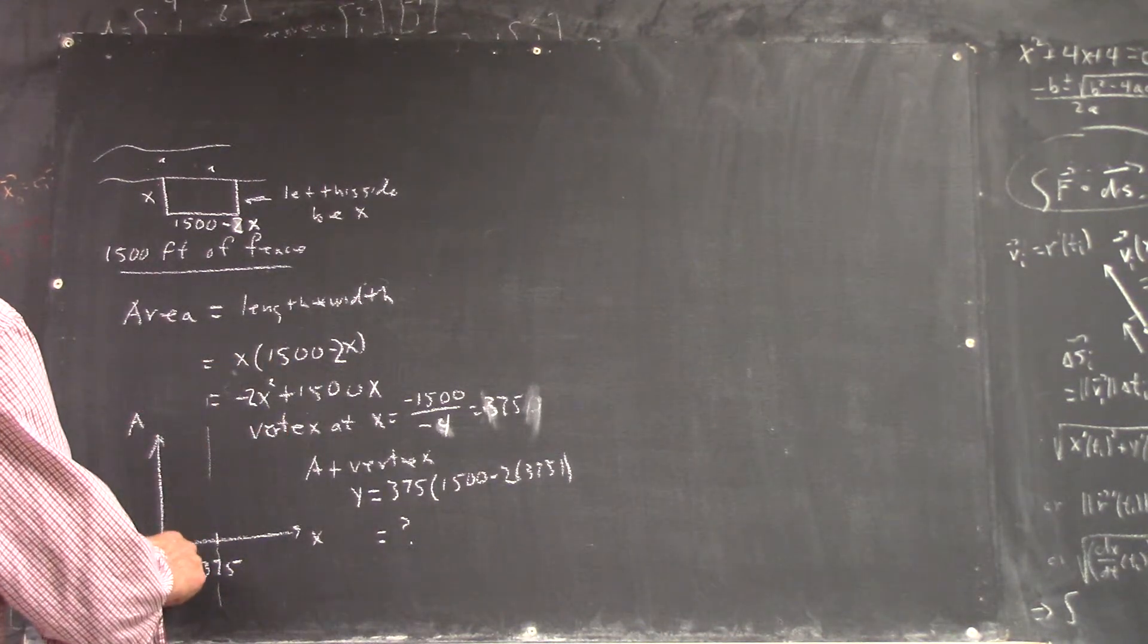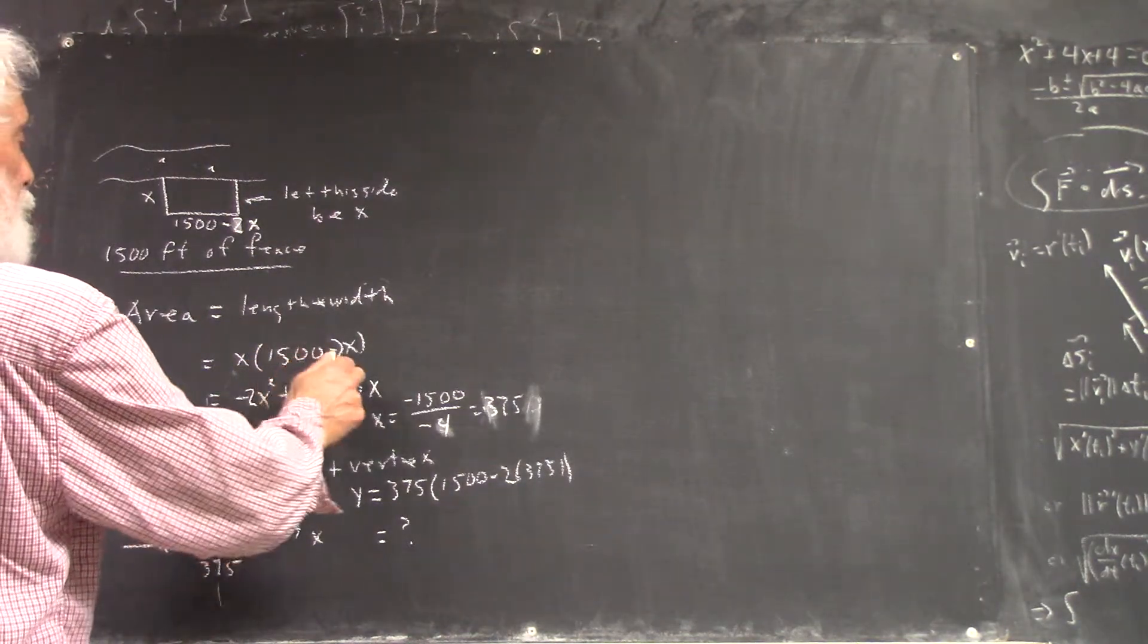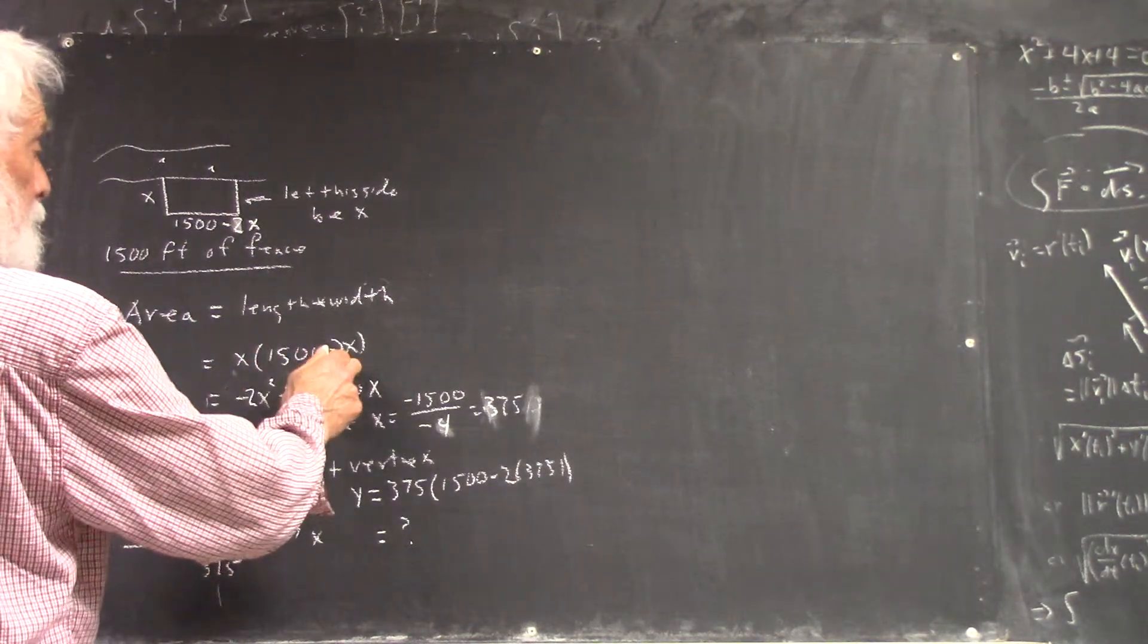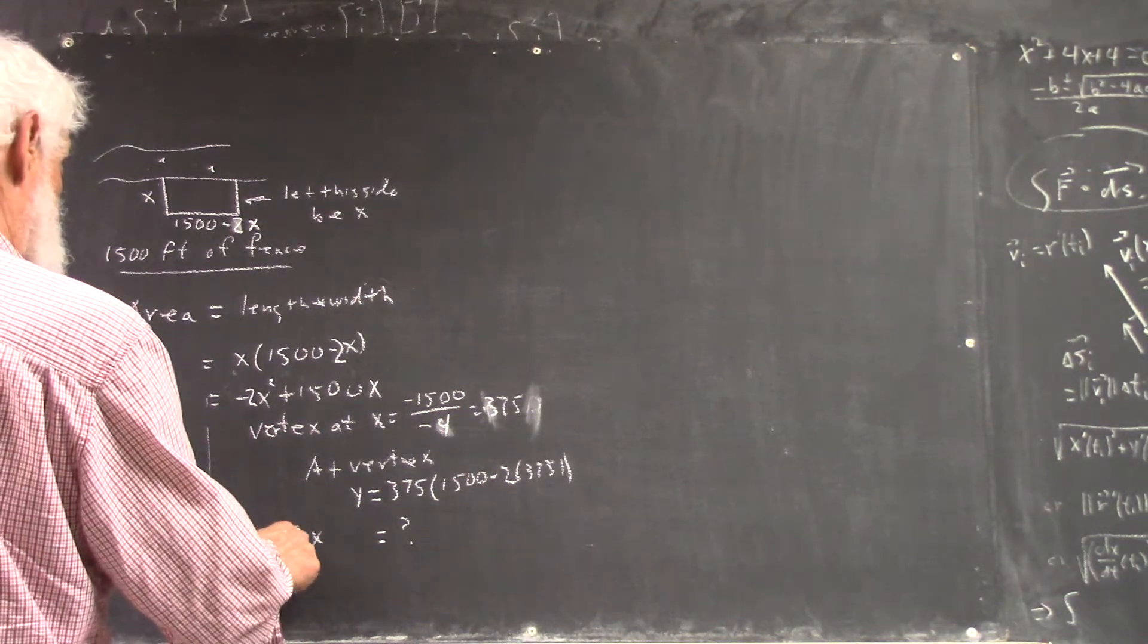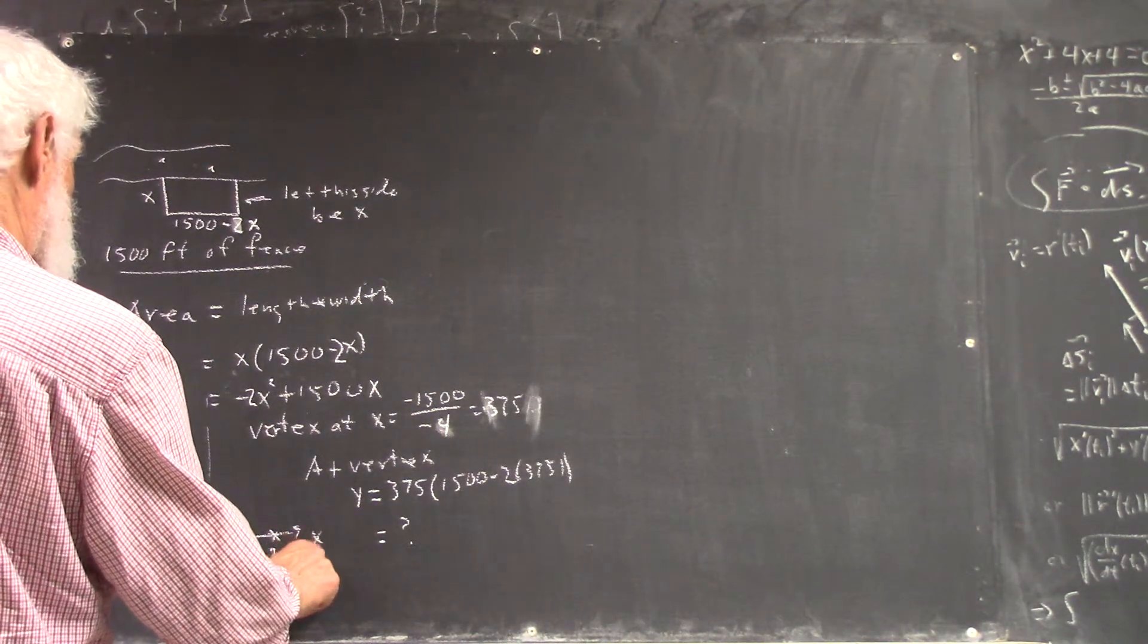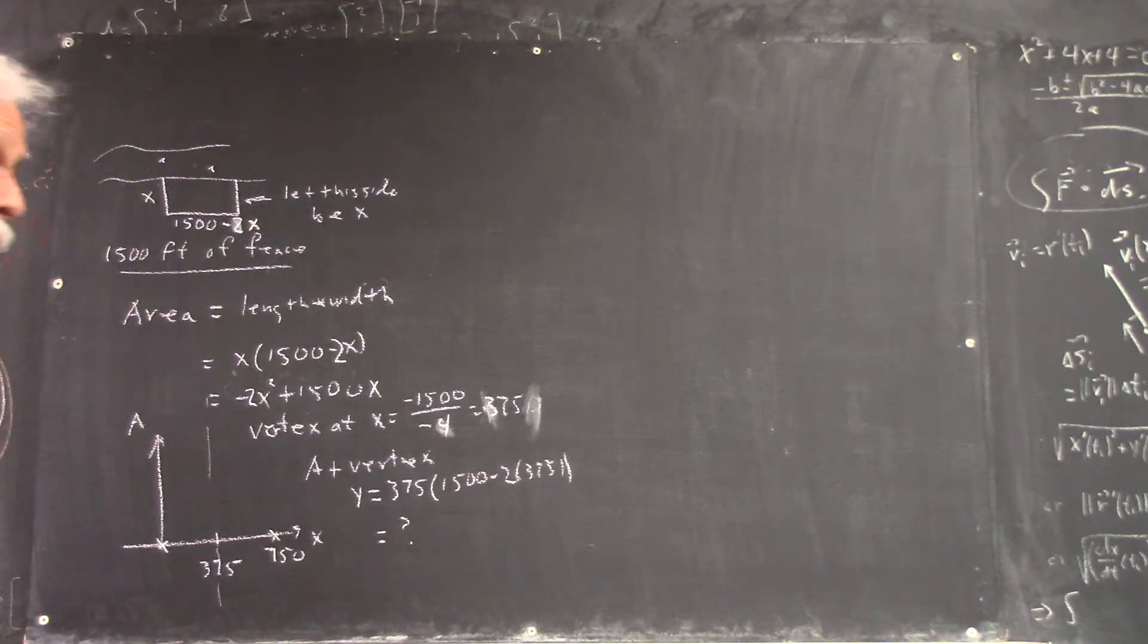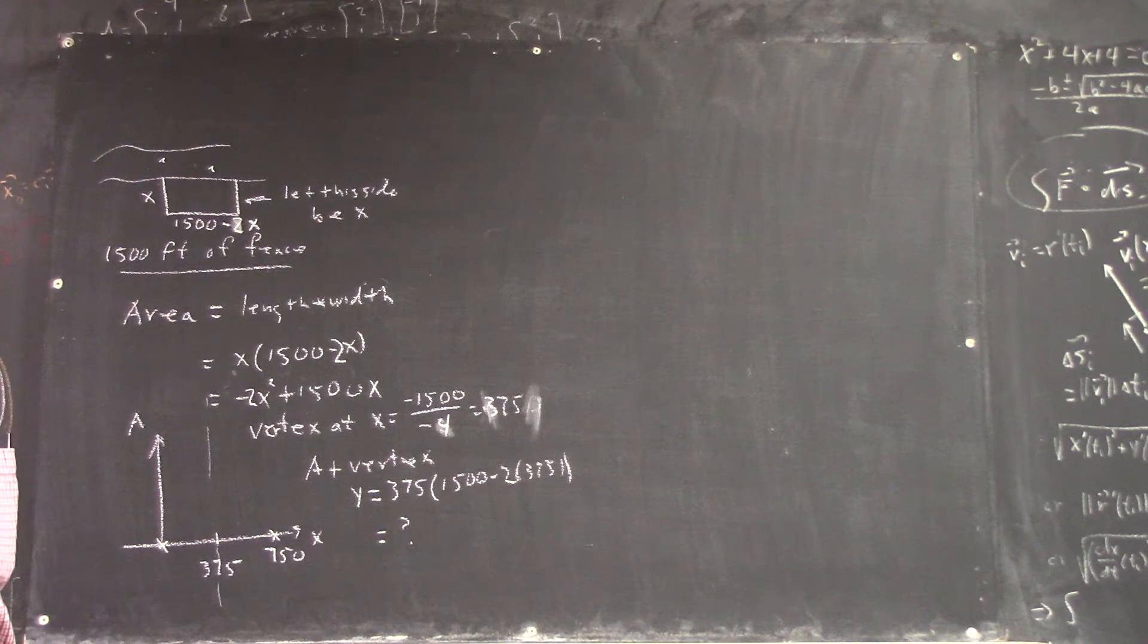If x is seven hundred and fifty, because fifteen hundred minus two x is zero. If x is seven hundred and fifty, and this is all part of how you analyze quadratic functions, which y'all are fairly good at at the midterm. I assume you can do it. So you're going to have a graph that looks like this.